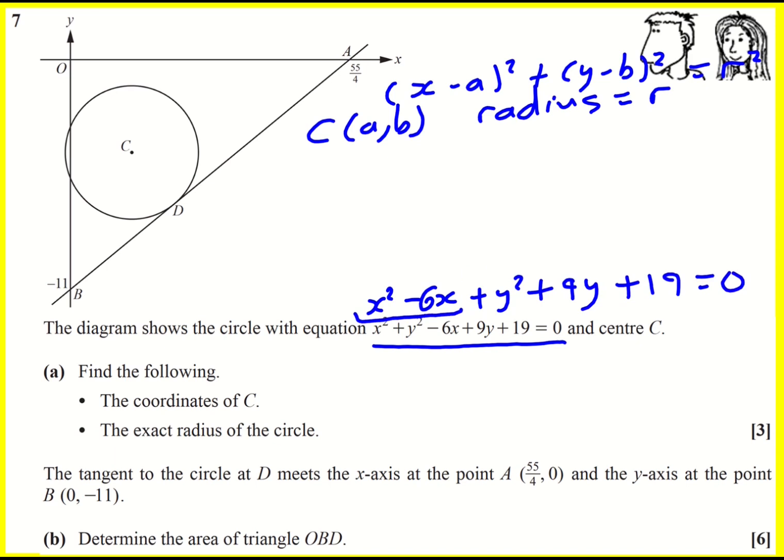So completing the square here, we're going to get x minus 3 all squared. We just have that 6, or should I say minus 6, and then I'm going to need to minus 9. So that bit I've underlined is exactly the same. I'm assuming that you're comfortable completing the square so I'm not going to go into any more detail.